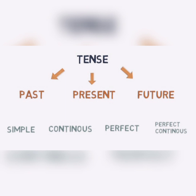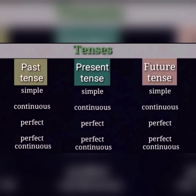Altogether there are twelve forms of tenses. Under past tense: simple past tense, past continuous tense, past perfect tense, and past perfect continuous tense. Under present tense: simple present tense, present continuous tense, present perfect tense, and present perfect continuous tense.